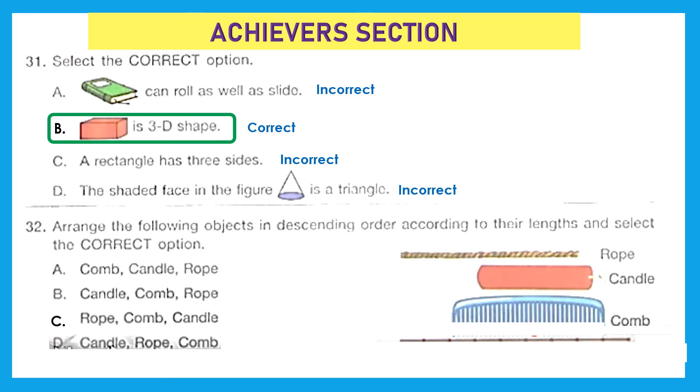Question 32: Arrange the following objects in descending order according to their lengths and select the correct option. Descending order means the highest would be the first and at the end would be the lowest. Okay, so let's see. Comb is six in length, then candle is five in length, and rope is seven in length. So which one is the highest? Seven, then comes six, then comes five. Rope, comb, candle. Option C is the right answer.